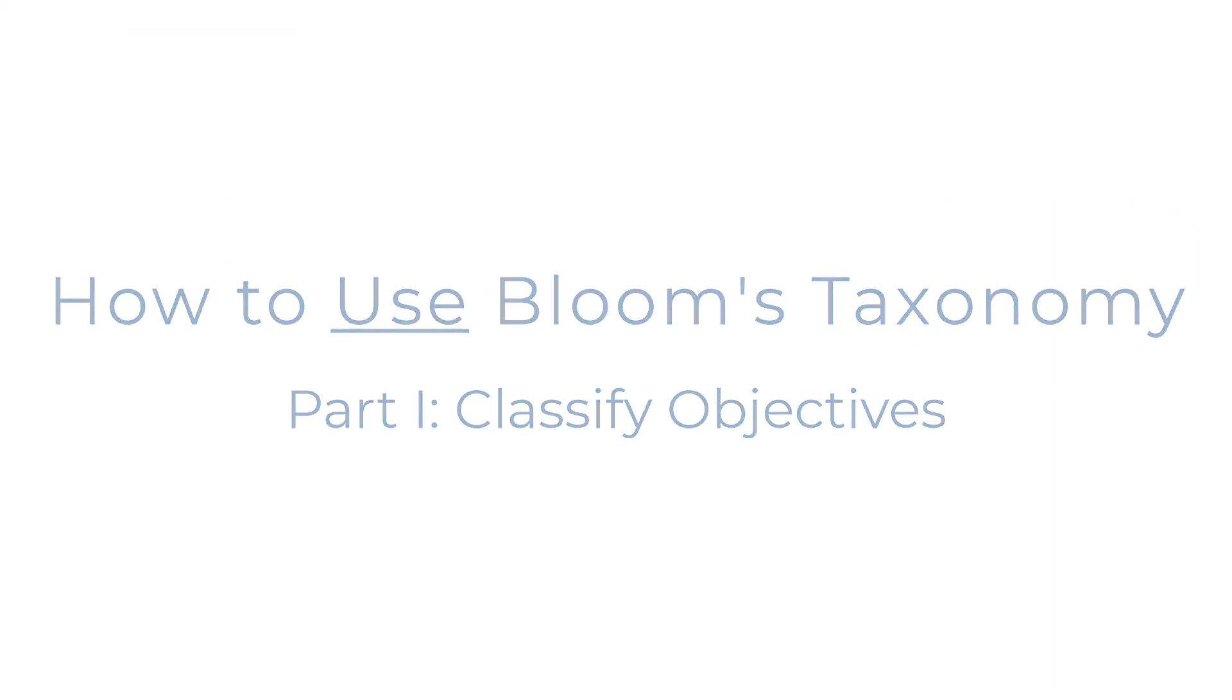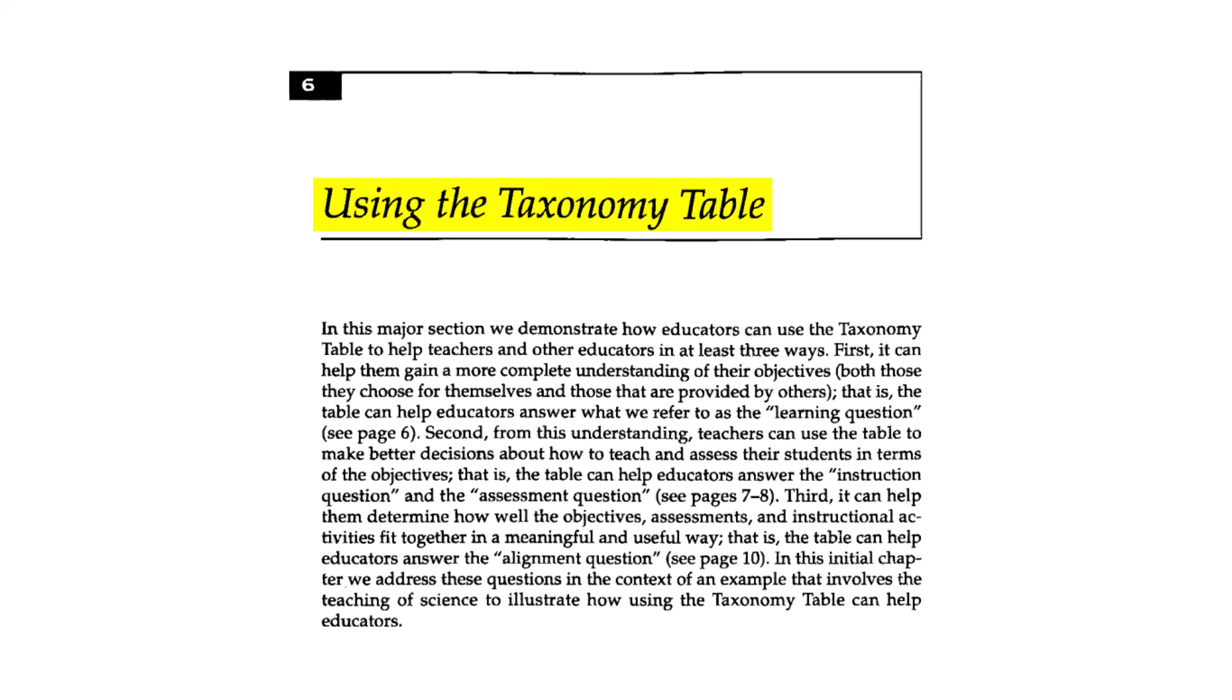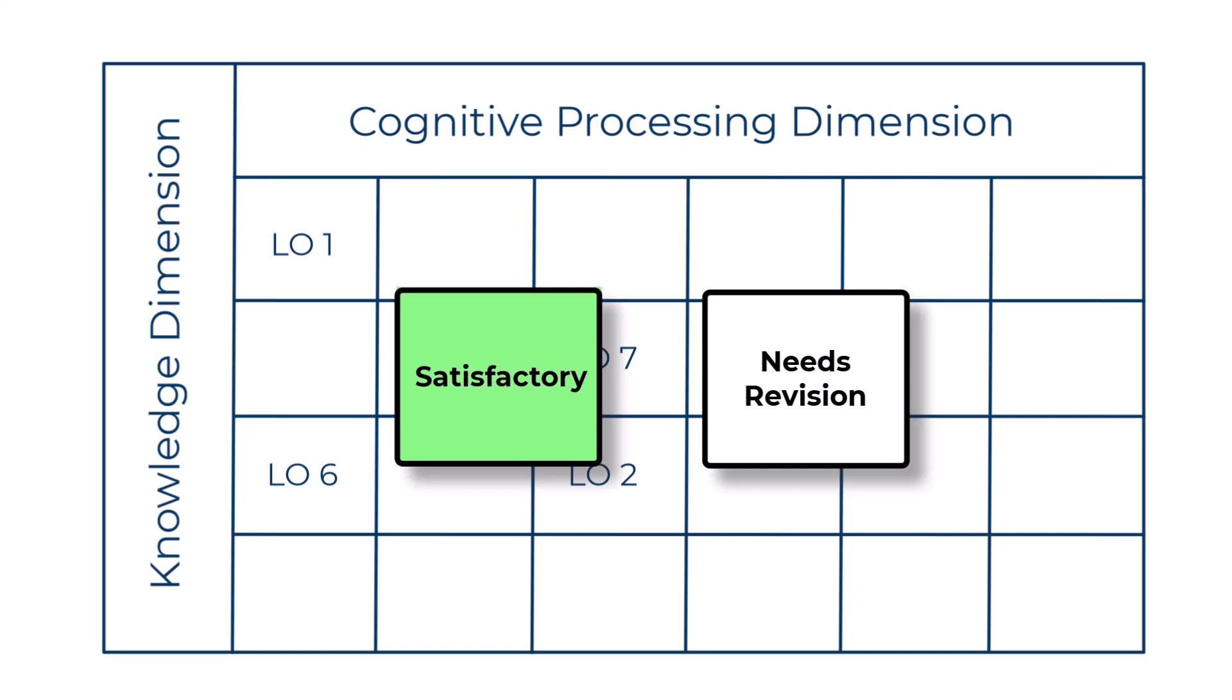It is often mistakenly assumed that the taxonomy is a tool for writing learning objectives. However, in fact, it is a tool to analyze objectives that have already been written. In addition, we do this to determine which objectives are emphasized and or missing. This analysis leads to either a general satisfaction with the state of affairs or a need to modify the course to achieve a more effective instructional design.